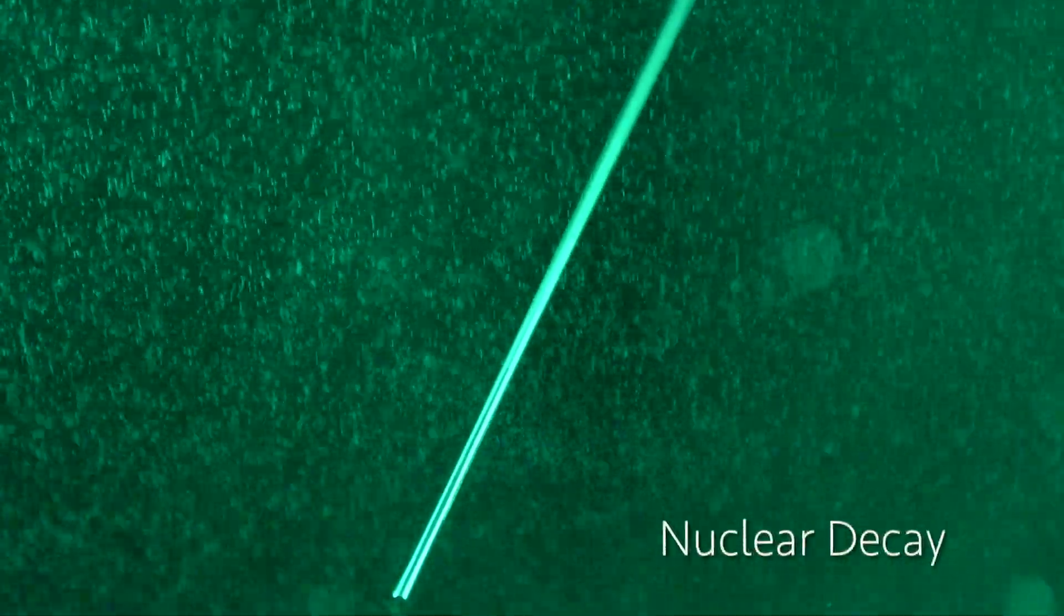If terrestrial radiation such as nuclear decay is the detection target, then a radioactive object such as a thoriated tungsten electrode can be put into the chamber to visualize the nuclear decay emissions.